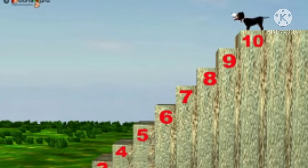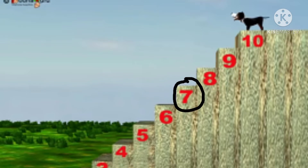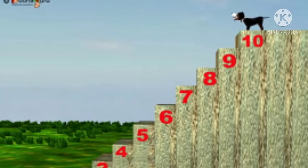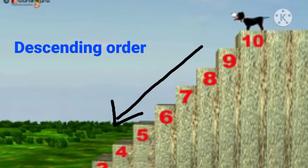Now the dog is very happy. He got the bone. He takes the bone and now he wants to go back down. He will go from biggest to smallest number. From 10 he comes down to 9, then 8, 7, 6, 5, 4, 3, 2, 1. And now he has reached down. The order of numbers when we count from bigger to smaller, that is from the biggest number to the smallest number, is called descending order.